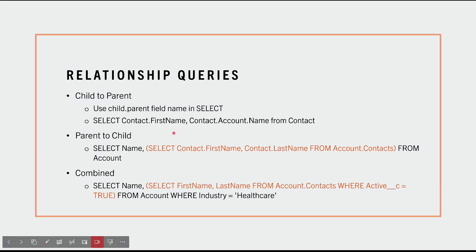Relationship queries are really powerful because they let you run queries and get the data from parents up to five levels deep in your child. So let's say you are starting with opportunity and you wanted to see the values of account in that same query — you can do that without having to create a formula field. You can do that in reports as well, but it's just way faster to run a SOQL query than creating a report in most cases. The SELECT and FROM parts do not change.